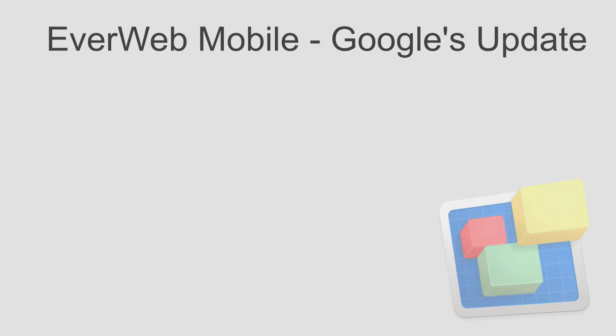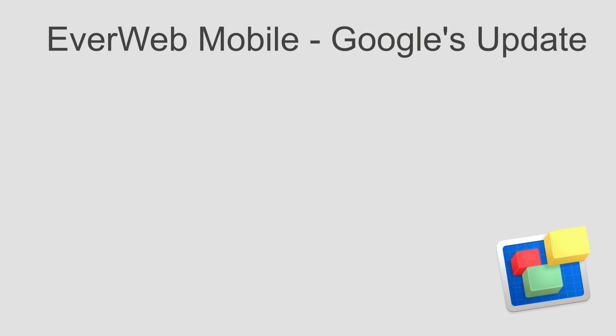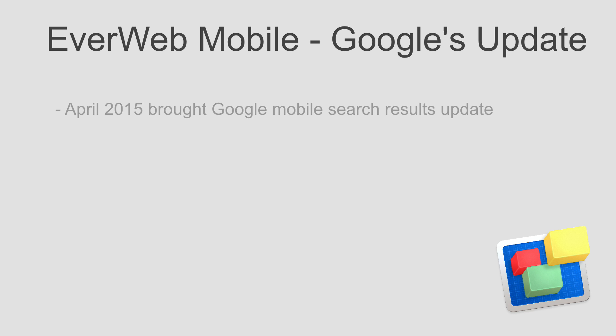In late April of 2015, Google made a change to its results algorithm for users searching on mobile devices. In this video, we are going to discuss the most important changes that took place and what every EverWeb user needs to know about it.